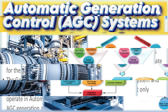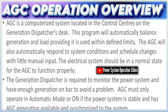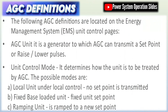Automatic generation control is a vital component of modern power system operations, designed to maintain system frequency and power exchange between control areas within desired limits by automatically adjusting the output of multiple generators. AGC works by monitoring system parameters such as frequency and tie-line flows and sending control signals to generators to correct any deviations from scheduled values. There are several types of AGC schemes,